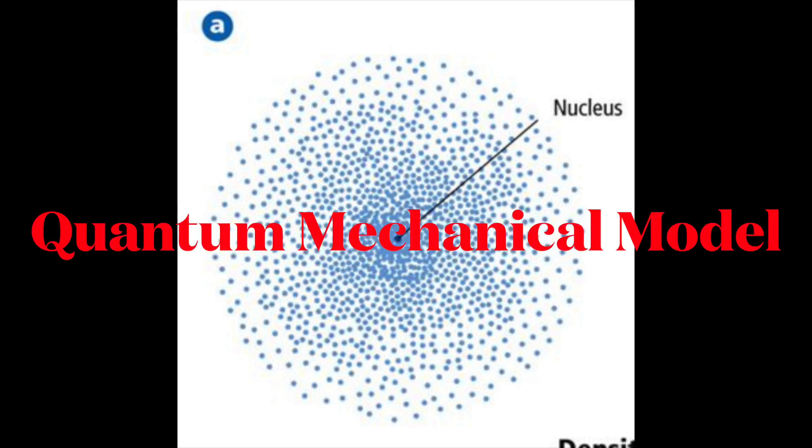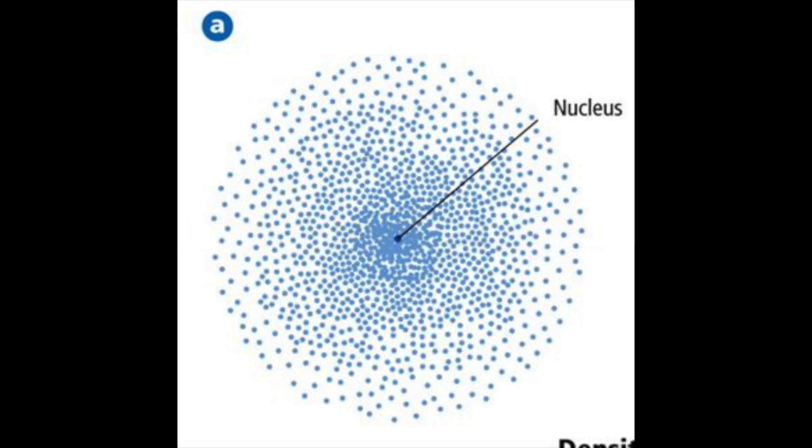About a decade later, in 1926, Erwin Schrödinger came up with what we currently call the quantum mechanical model.